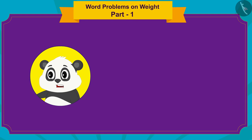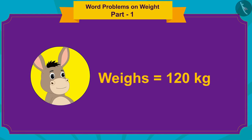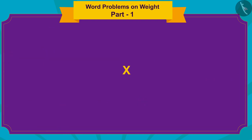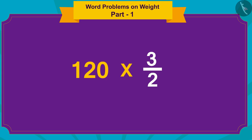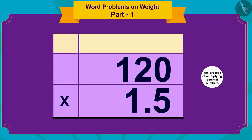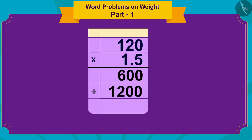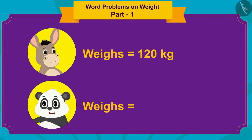Golu's weight is one and a half times Bholla's weight, and Bholla weighs 120 kilograms. So, to find Golu's weight, we have to multiply Bholla's weight by 3/2 or 1.5. Children, do you remember the process of multiplying decimal numbers that we learned? Let us do this multiplication quickly. Golu weighs 180 kilograms.